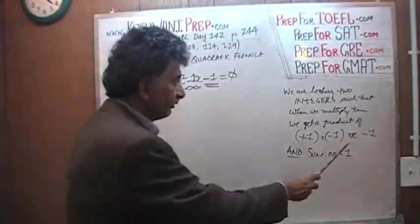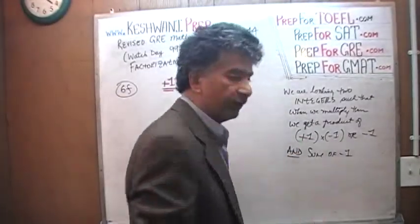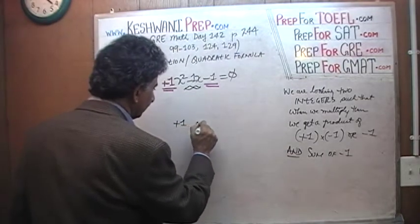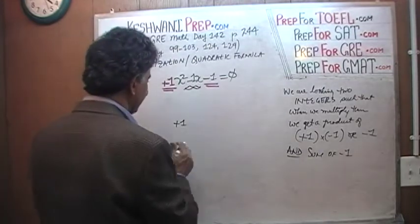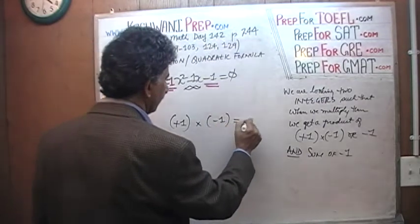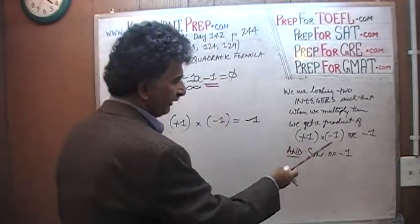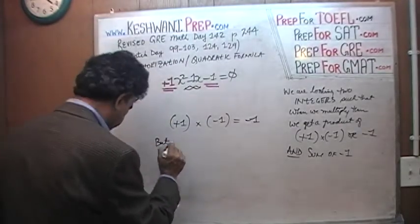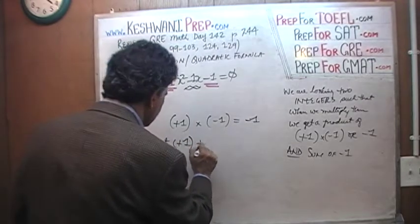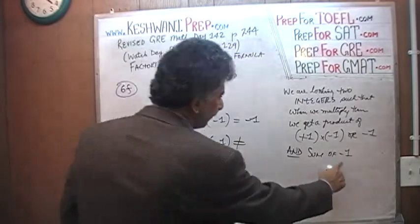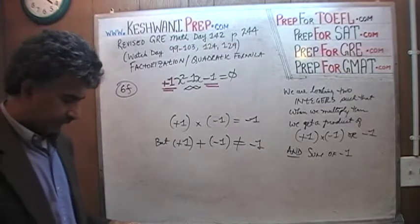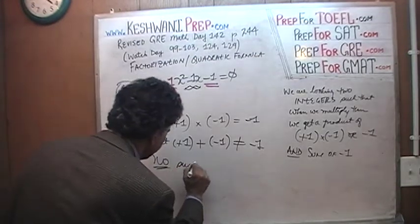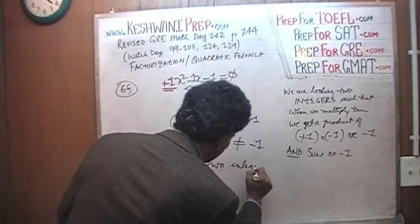Since the product has to be negative 1 and they must be integers, that doesn't leave us much choice — there is only one option: positive 1 and negative 1, or negative 1 and positive 1, which is the same thing. Positive 1 times negative 1 gives us the product of negative 1, so the first condition is easy to fulfill. But their sum — positive 1 plus negative 1 — equals 0, not negative 1. So no such two integers exist.